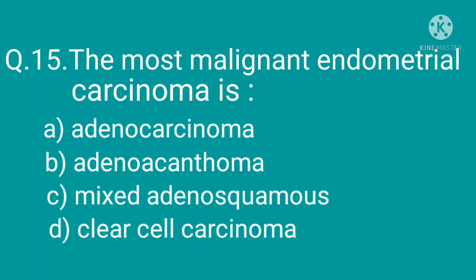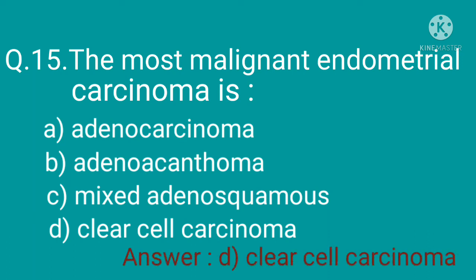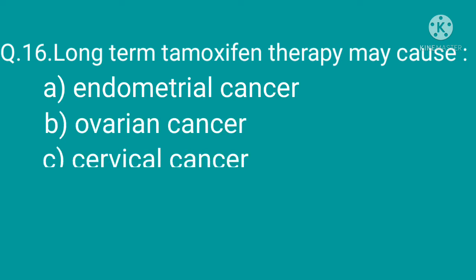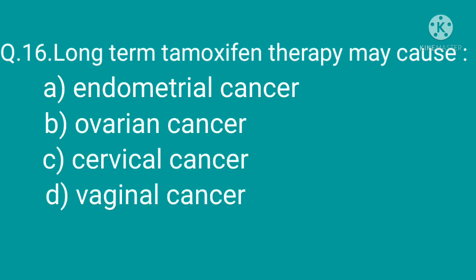Question 15: The most malignant endometrial carcinoma is — option A: adenocarcinoma, option B: adenoacanthoma, option C: mixed adenosquamous, option D: clear cell carcinoma. The correct option is option D, clear cell carcinoma.